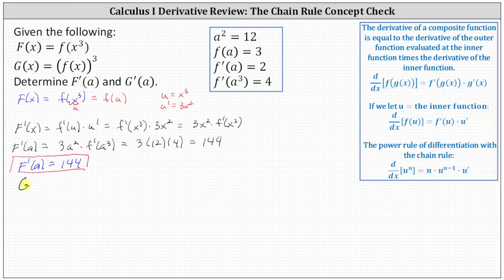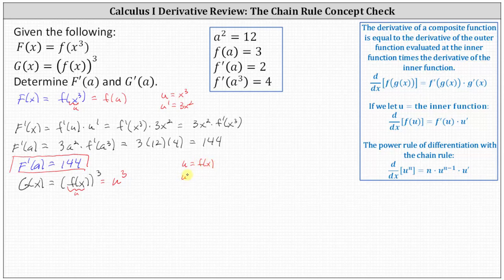Now let's consider G(x) = [f(x)]³. For G, the inner function is f(x), which we'll identify as u, and the outer function is the cubing function. We can think of G(x) as u³, where u = f(x) and therefore u' = f'(x). From the power rule with chain rule: the derivative of uⁿ with respect to x equals n · u^(n−1) · u', which is the derivative of the outer function evaluated at the inner function, times the derivative of the inner function.